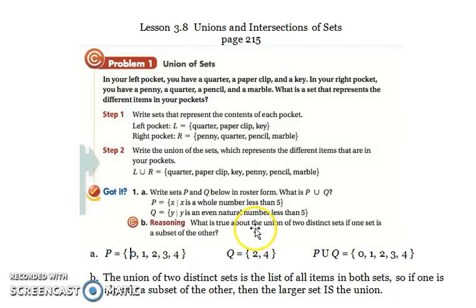What is true about the union of two distinct sets if one is a subset of the other? Well, Q was a subset of P because all of its members are in here. So the union of two distinct sets is the list of items in both sets. So if one is already a subset of the other, then the larger is the union. And that's exactly what we showed right here, that P and P union Q are the exact same thing because Q was already in P, and we don't have to list those twice.